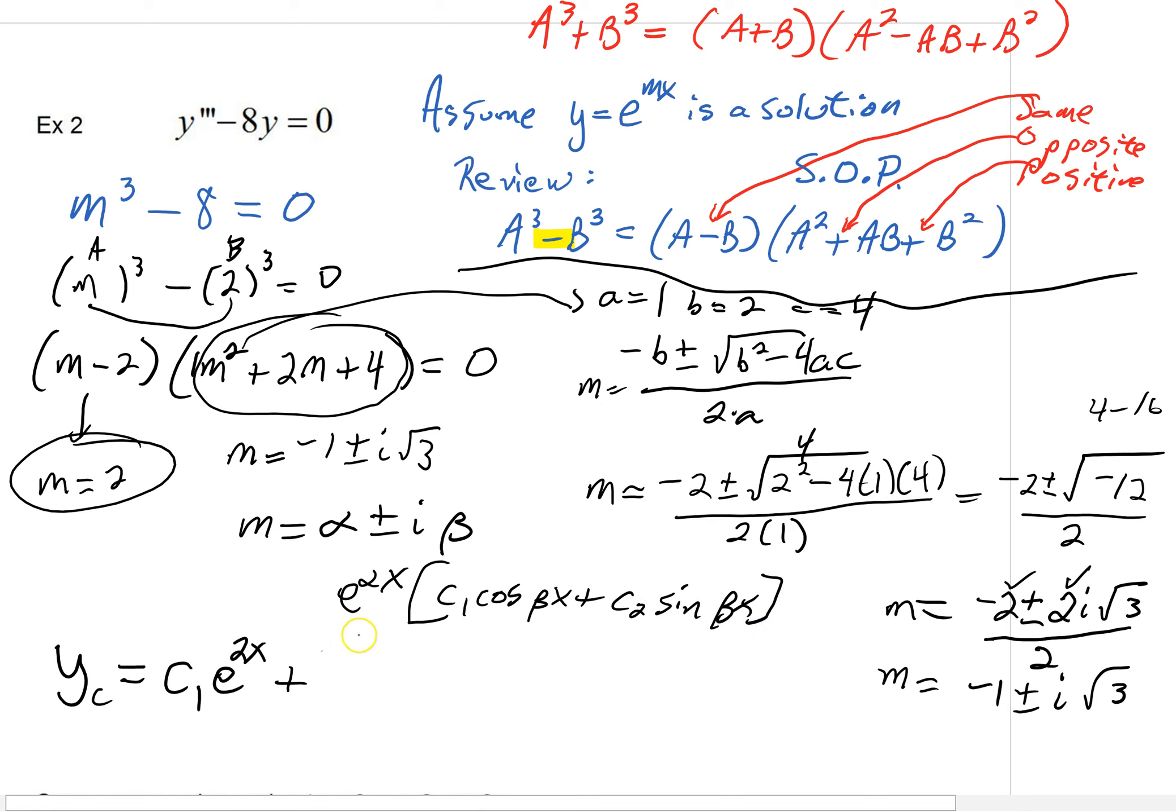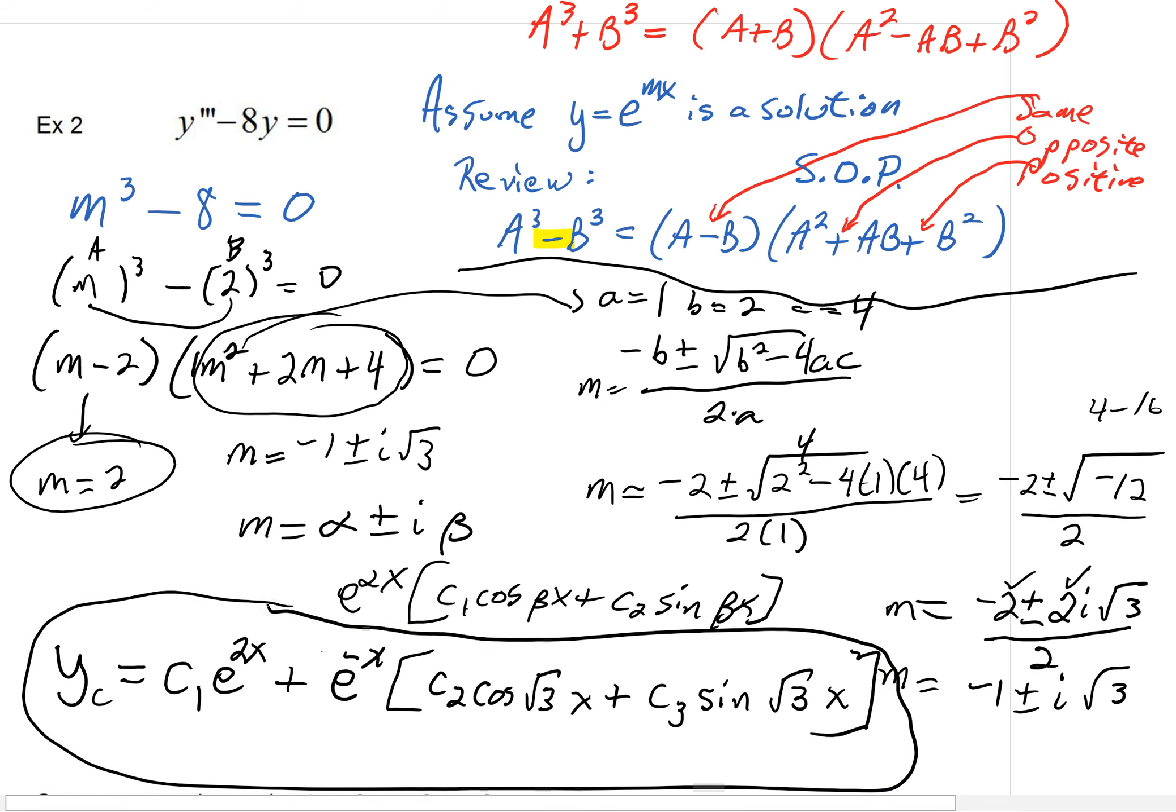And then inside we'd have c1 cosine of beta x plus c2 sine of beta x. Well, what's that really going to look like? We're going to have e to the alpha is negative 1. So I could just write negative x. The c1 right here, I'm actually going to call it a c2. I already used a constant. But beta is radical 3. So I'm just going to go radical 3x. And then we're going to say we've got some other constant right here for a sine. Again, that's a radical 3x. And guys, this would be your general solution to this differential equation.